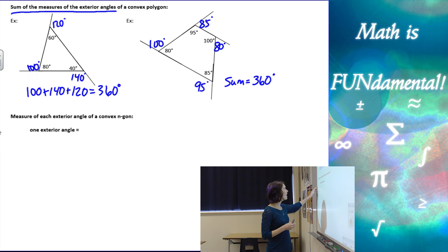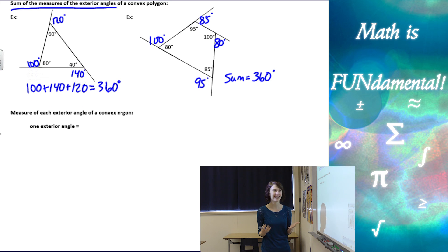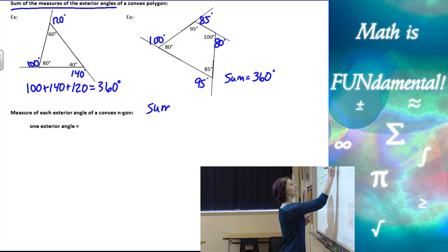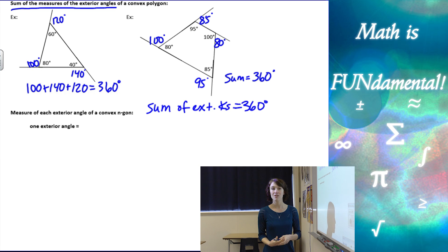So as a little formula, doesn't really need a formula, it's pretty cool. The sum of the exterior angles is always 360, no matter what size or how many sides you have on your polygon. And if I wanted to take the measure of one exterior angle, I can take that 360 and just divide by the number of sides or the number of angles.